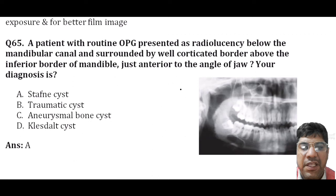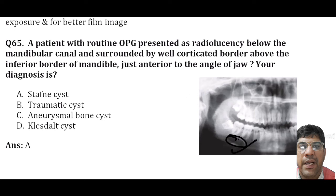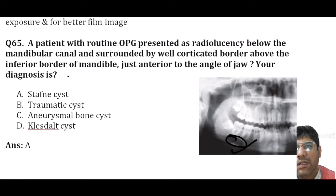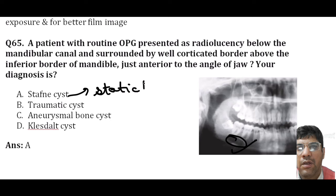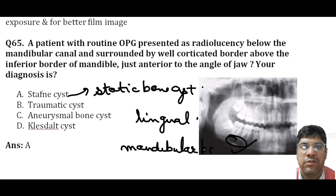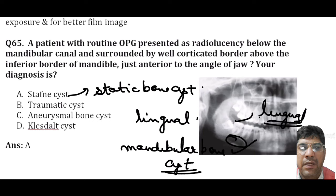A patient's routine OPG presents with a radiolucency below the mandibular canal surrounded by a well-corticated border above the inferior border of the mandible, just anterior to the angle of the mandible. The diagnosis would be a Staphne cyst, also known as a static bone cyst or lingual mandibular bone cyst. It is a developmental defect occurring due to the inclusion of glandular tissue adjacent to the lingual surface of the mandible. It is asymptomatic and found incidentally on radiographic examination.